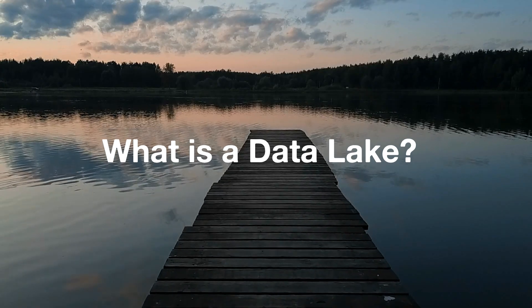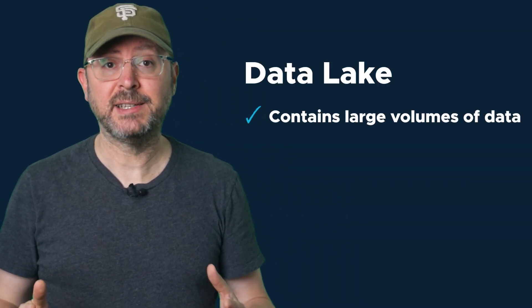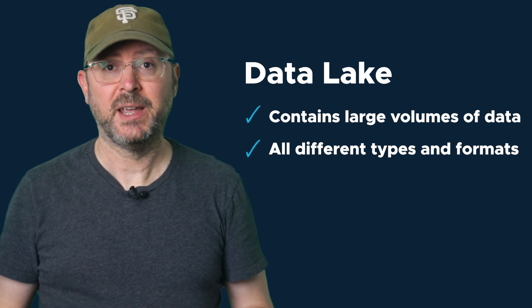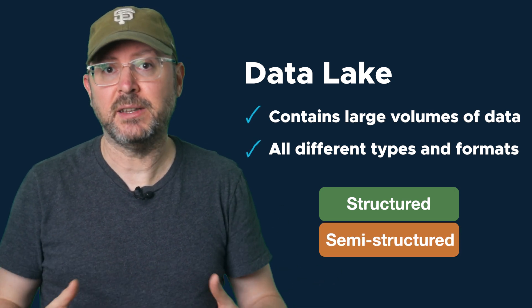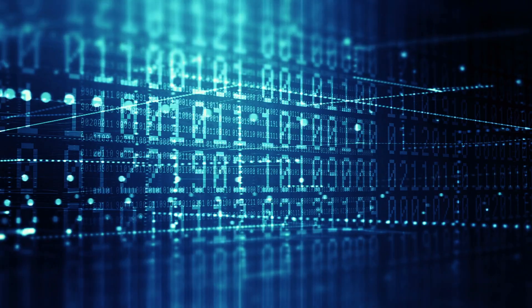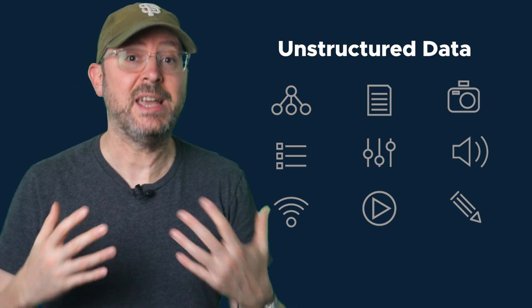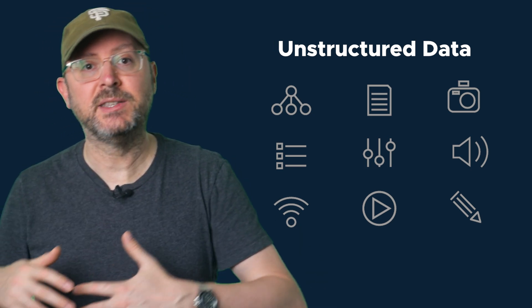The last of these data storage terms we're going to talk about is data lake. Like data warehouses, data lakes are centralized data repositories, but that's where the similarities end. Data lakes are built to contain large volumes of data of all different types in all different formats — everything from regular structured data, like in data warehouses, to semi-structured data like JSON and XML files, to unstructured data. Unstructured data is basically anything else — literally anything — from video and audio files, to images and graphics, to text documents, raw log files, sensor data, social media feeds — the list is endless. In a business intelligence setting, it's quite rare that you will find yourself encountering data lakes.